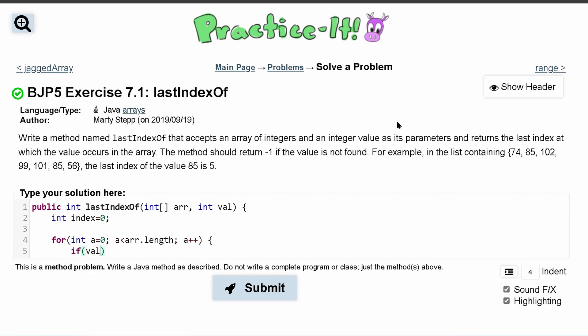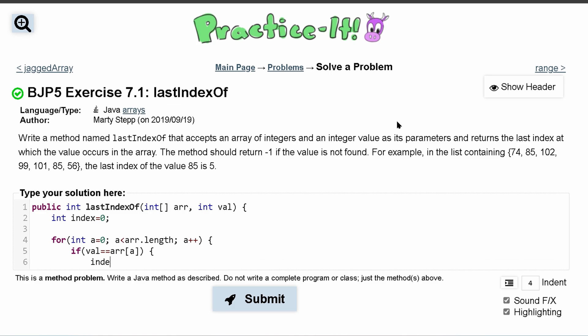If our value, the one that we're searching for, is equal to our current element inside of our array - and that'll be determined by where we are in our for loop - then we can set our index value equal to the ath index.